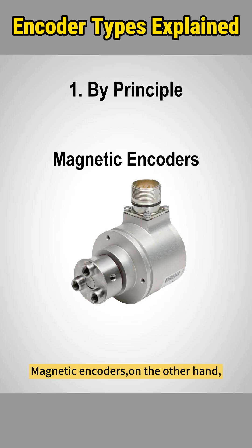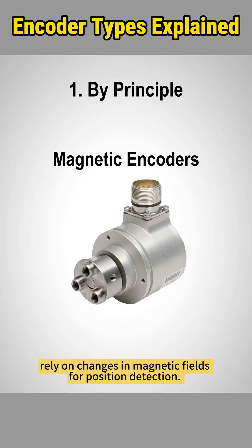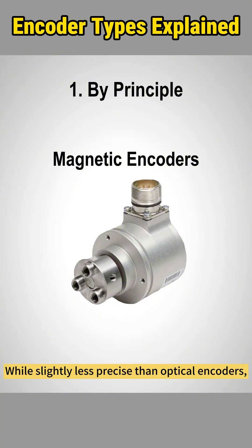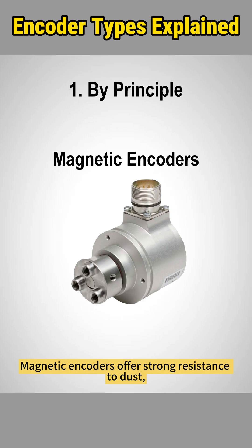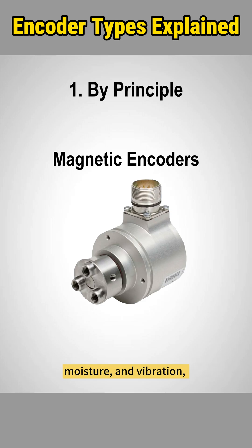Magnetic encoders, on the other hand, rely on changes in magnetic fields for position detection. While slightly less precise than optical encoders, their durability makes them a popular choice. Magnetic encoders offer strong resistance to dust, moisture, and vibration, making them suitable for harsh environments.